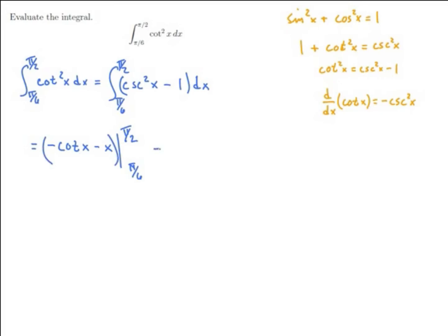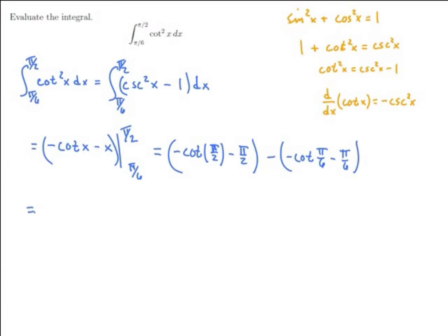Now I want to evaluate at the endpoints. First let's plug in pi over 2: I have negative cotangent of pi over 2 minus pi over 2. Cotangent is 1 over tangent, and tangent of pi over 2 is undefined, so cotangent of pi over 2 is 0. So I get 0 minus pi over 2.